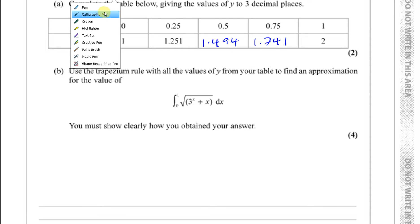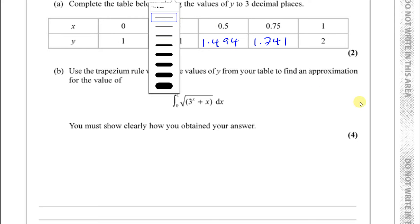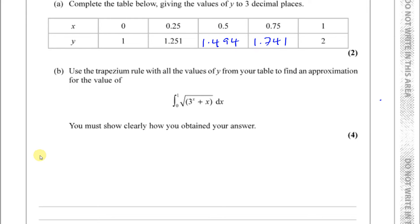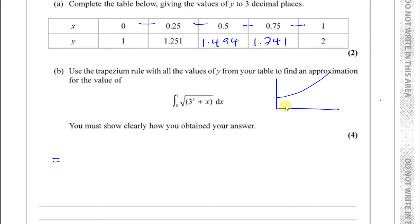Some people just memorize the formula without understanding what's going on. To understand it, think about the distance between the parallel sides of the trapeziums. Your graph is going upwards. The X values go 0, 0.25, 0.5, 0.75, and 1. So you can see that you've got 1, 2, 3, 4 trapeziums.